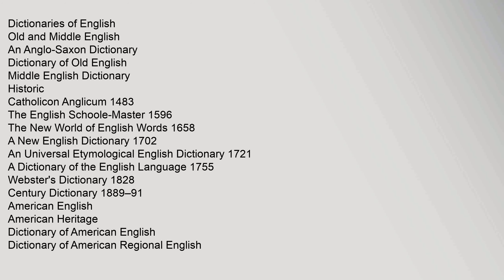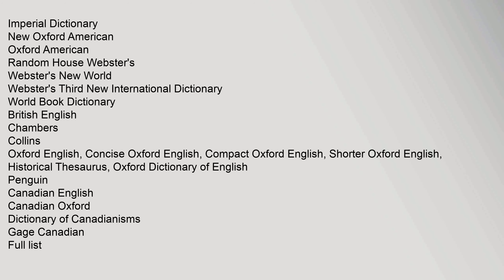Dictionaries of English — Old and Middle English and Anglo-Saxon: Dictionary of Old English, Middle English Dictionary, Historic Catholicon Anglicum 1483, The English School Master 1596, The New World of English Words 1658, A New English Dictionary 1702, An Universal Etymological English Dictionary 1721, A Dictionary of the English Language 1755, Webster's Dictionary 1828, Century Dictionary 1889–91. American English: American Heritage Dictionary, Dictionary of American English, Dictionary of American Regional English, Imperial Dictionary, New Oxford American, Oxford American, Random House Webster's, Webster's New World, Webster's Third New International Dictionary, World Book Dictionary. British English: Chambers, Collins, Oxford English, Concise Oxford English, Compact Oxford English, Shorter Oxford English, Historical Thesaurus, Oxford Dictionary of English, Penguin.